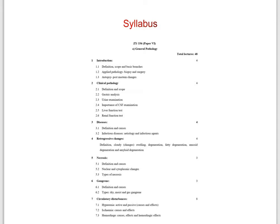In the seventh chapter, circulatory disturbances, the subpoints include hyperemia — both active and passive — then ischemia, its causes and effects, and hemorrhagic effects. Further points include thrombosis, that is thrombus formation, its causes and effects, and lastly embolism, covering its definition, sources, types, and effects.